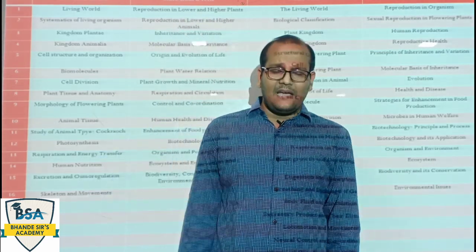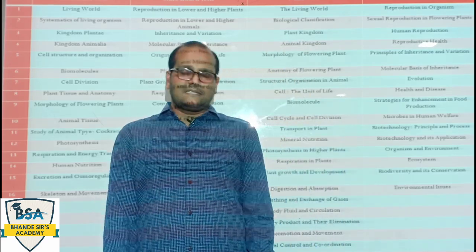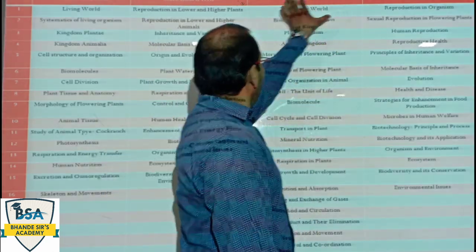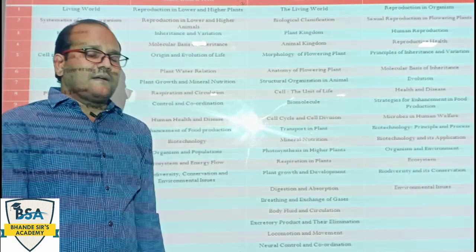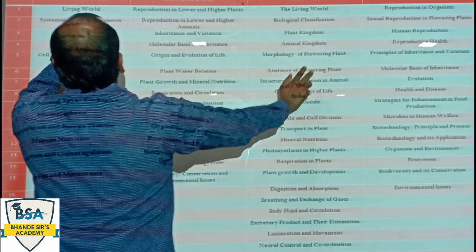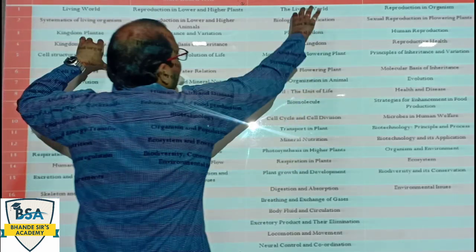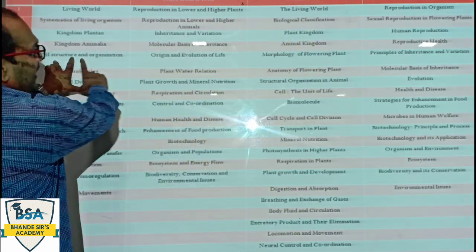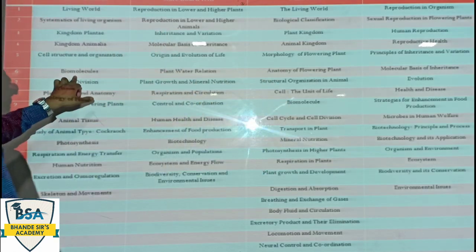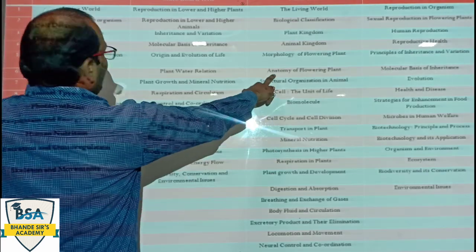जैसे कि हम देखेंगे कि कुछ पार्ट यहाँ से remove कर दिया है और कुछ पार्ट नया भी add कर दिया है। तो वो हम यहाँ पर discuss करेंगे। सबसे पहले NEET वाला syllabus और State Board का syllabus से compare करें। देखो, सबसे पहला unit Living World — as it is — so Systematics of Living Organisms, which we call Biological Classification, Kingdom Plantae, Kingdom Animalia — this is the same. Cell Structure and Organization, so Cell: the Unit of Life — this is the same. Plant Tissue Anatomy — so Anatomy of Flowering Plants.